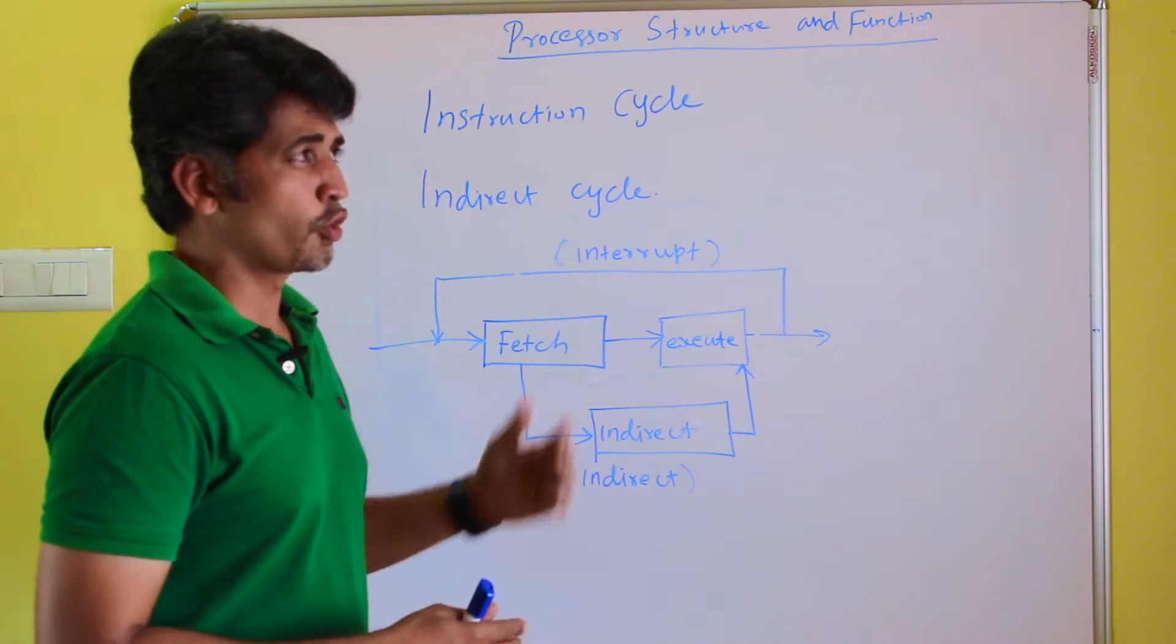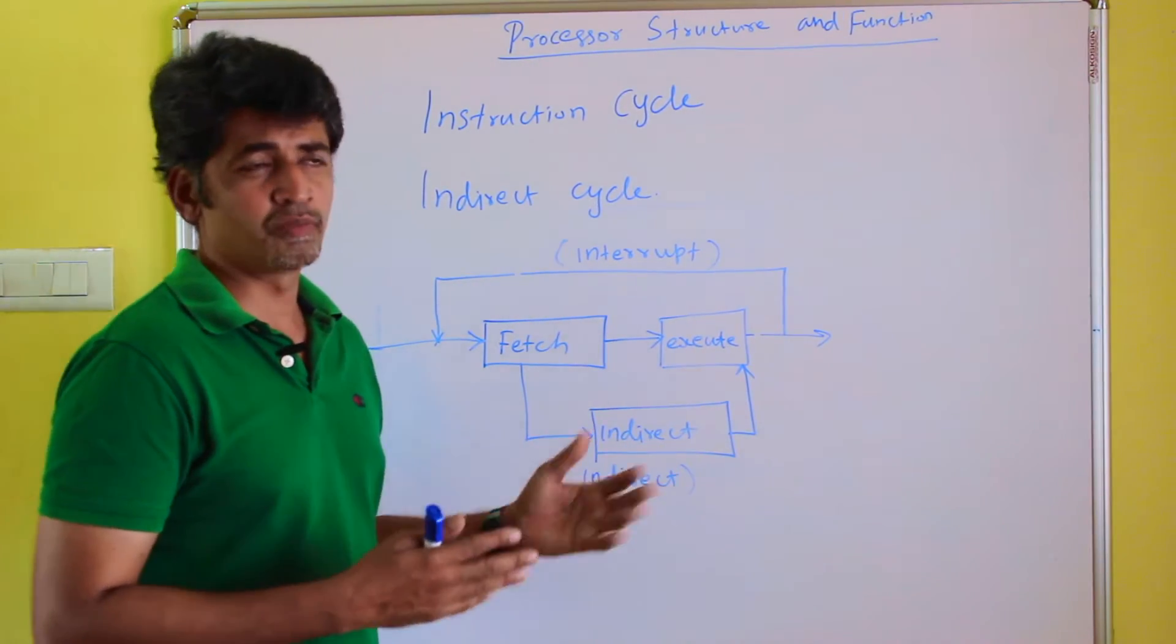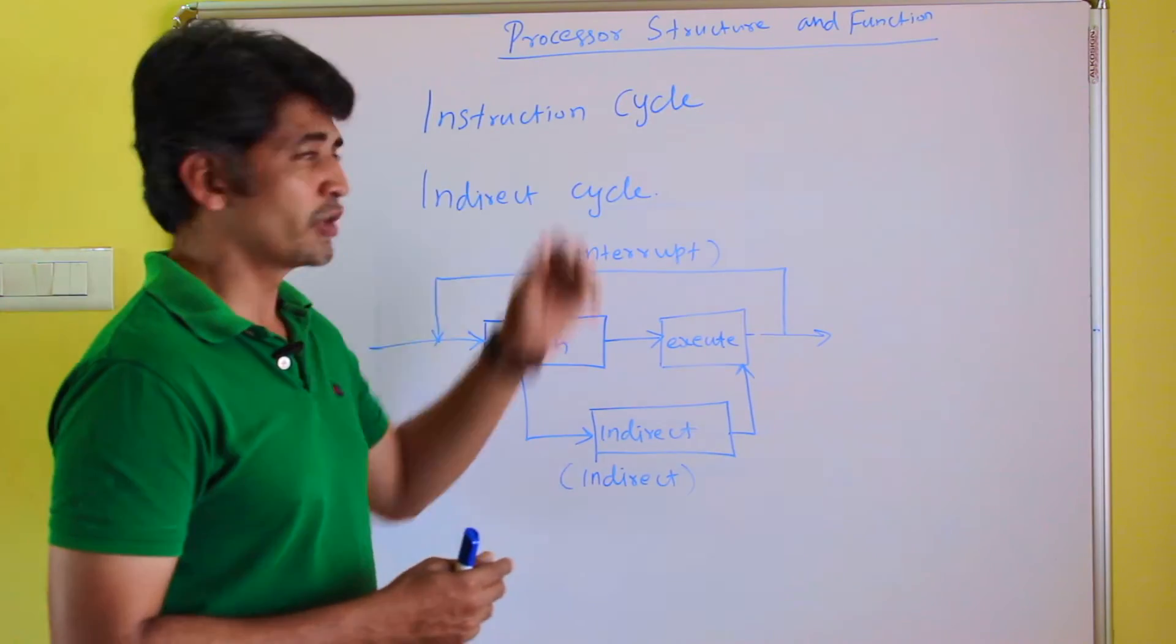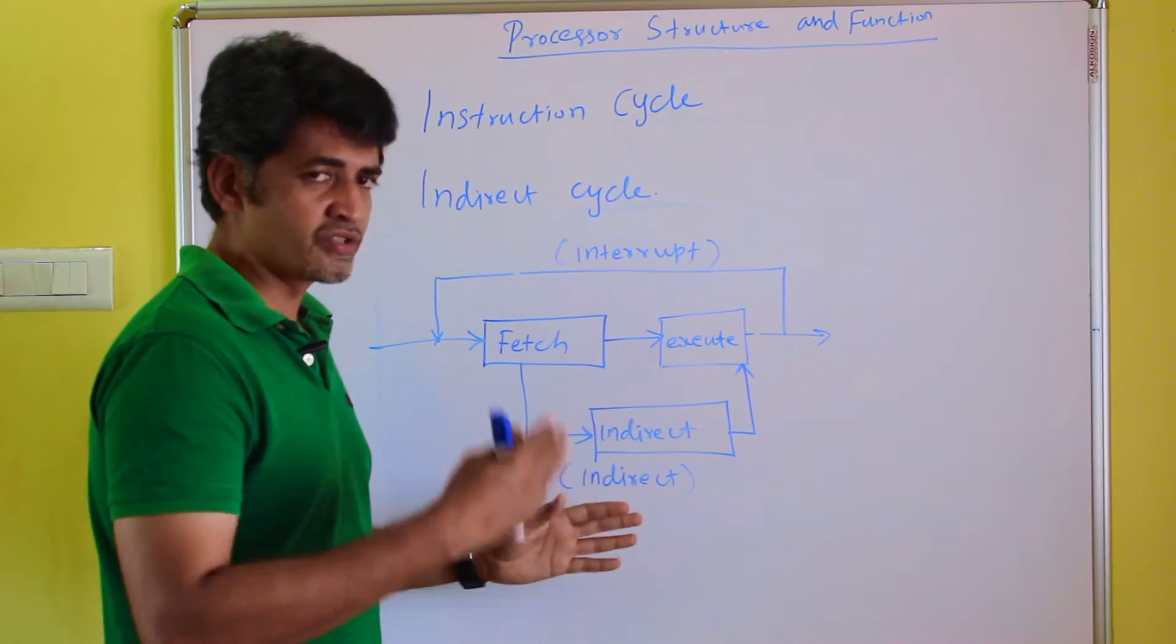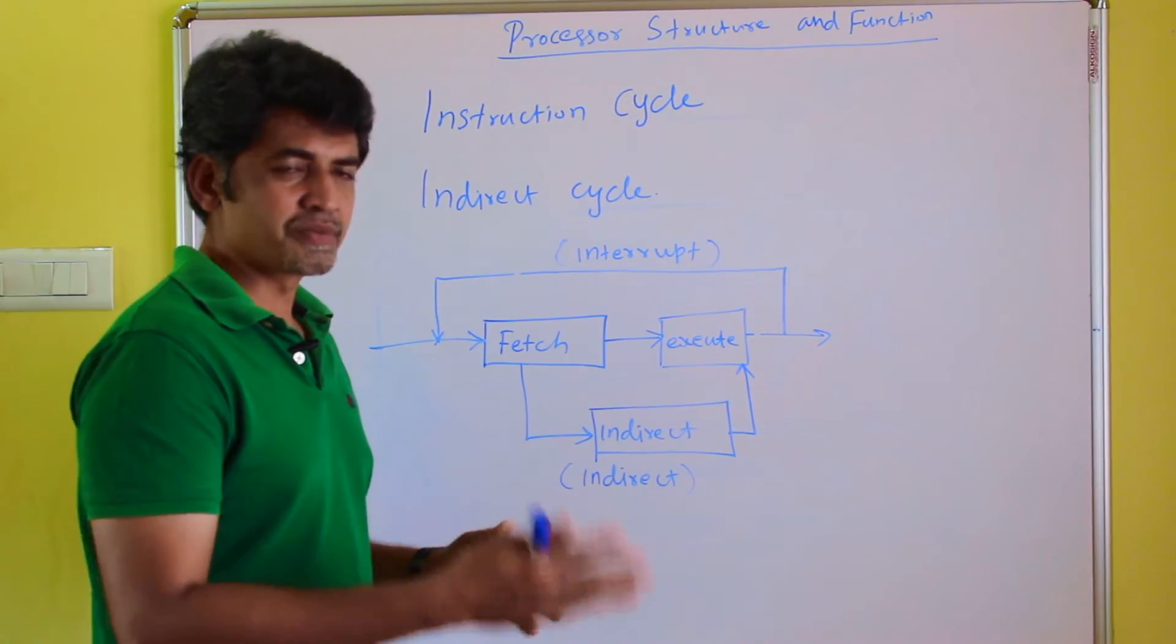We already discussed in the previous topics, in chapters two and three, about instruction cycle and indirect cycle. When is this indirect cycle required and when is the interrupt cycle required?